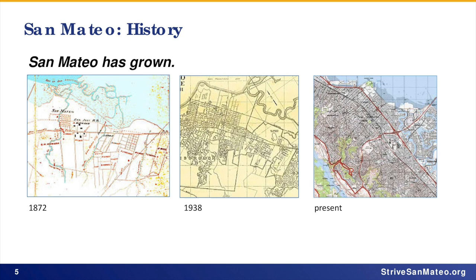Here's a brief history of San Mateo. Everybody remembers 1872, right? San Mateo started out as a much smaller community. By the 1930s it had more than doubled, and today we're definitely a built-out community. This change is evident throughout the county — it's not just San Mateo that has grown, but the entire county.